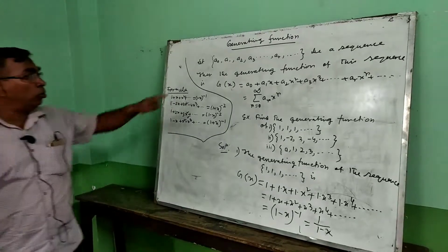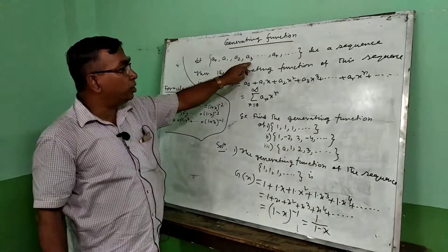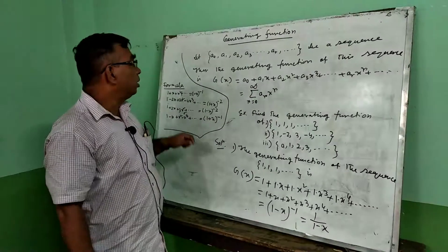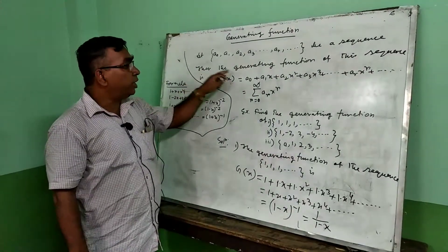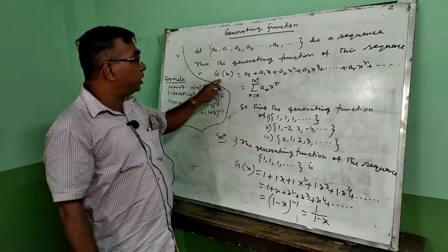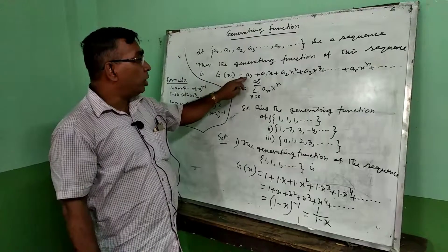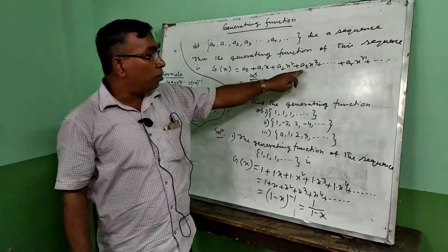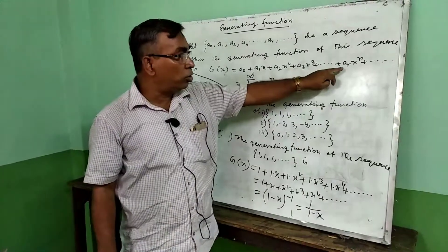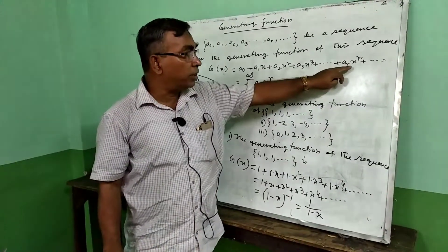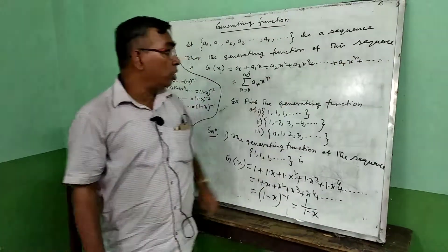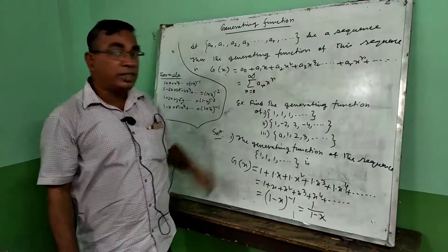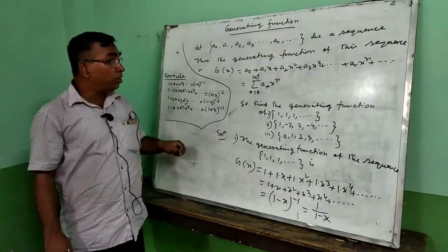Let a0, a1, a2, a3, ..., ar be a sequence. Then the generating function of this sequence g(x) equals a0 plus a1*x plus a2*x² plus a3*x³ plus ... plus ar*x^r plus ... This is an infinite series, and this infinite series is known as the generating function.